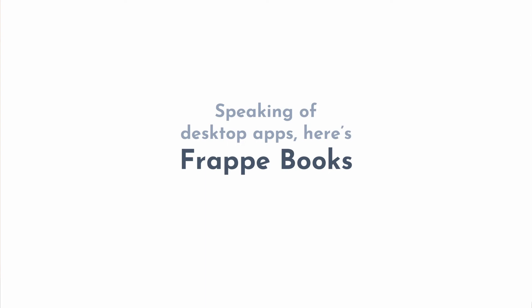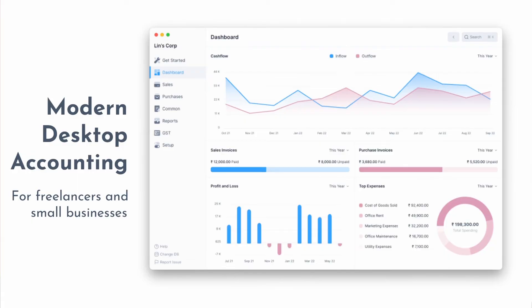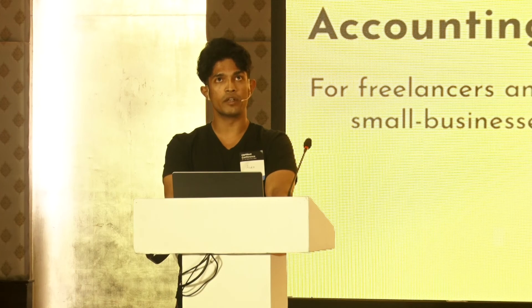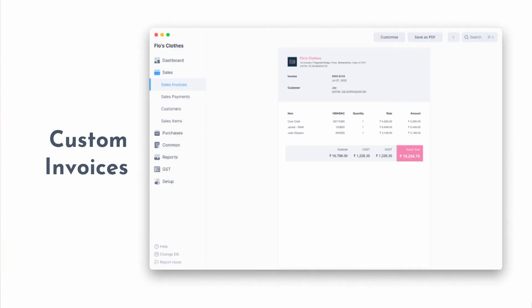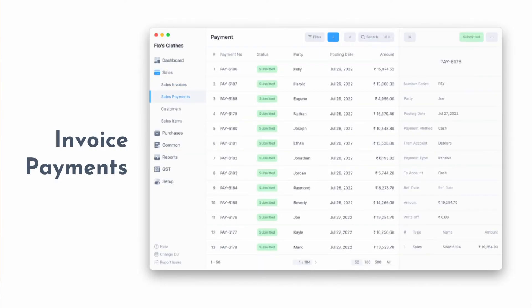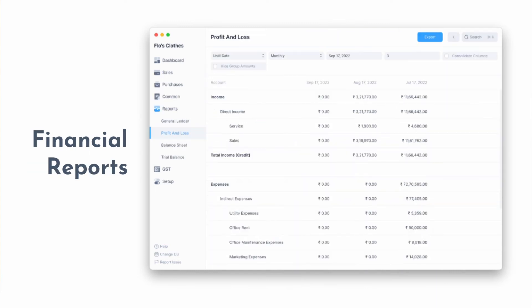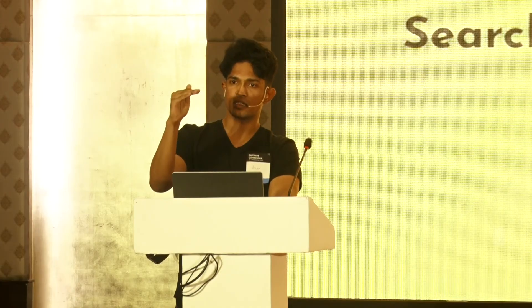Speaking of desktop apps — Frappe Books is basically a modern desktop accounting app for freelancers and small businesses. This is what I've been working on for the past year. Features include custom invoices, invoice payments, financial reports, and quick search. It's like a really stripped-down version of ERPNext accounting, but on the desktop.